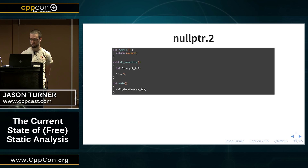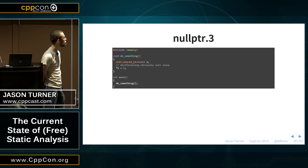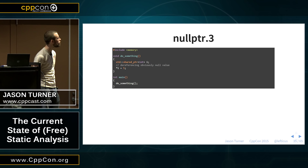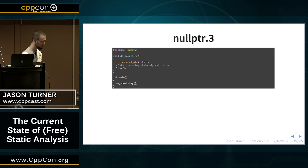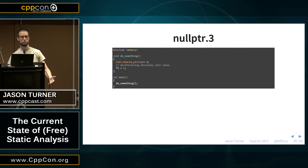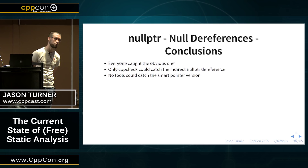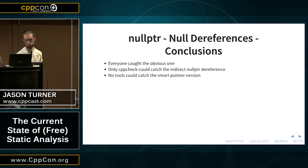What about here? Same thing — default constructing a shared pointer. It has a null value, so none of the tools warn about it because you don't have to initialize something that's got a constructor, but here we are assigning it to a null value. Every tool caught the obvious case of directly assigning to a null pointer. Only CppCheck could catch the indirect null reference, and no tools caught the smart pointer version.